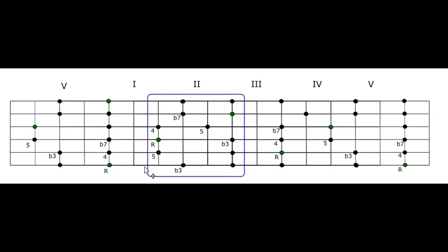In our second video on the pentatonic patterns, we're going to cover pentatonic pattern two, which comes after pentatonic pattern one when moving up the neck — moving away from the nut towards the pickups, going to higher frequency or higher pitch sounds. Pentatonic pattern two is kind of famous for these four particular notes, used a lot in a blues context.